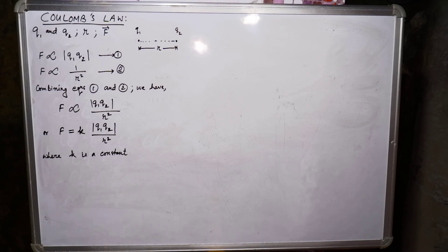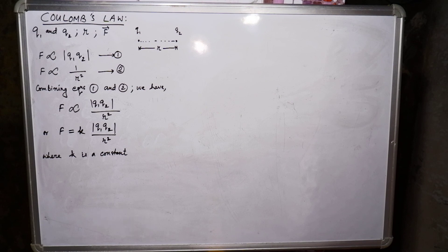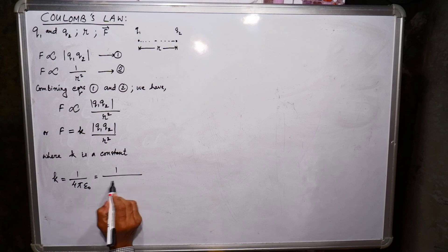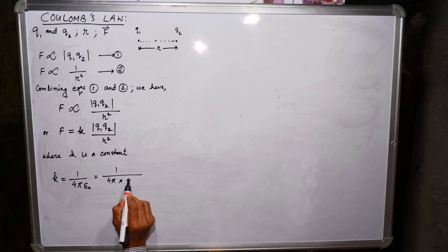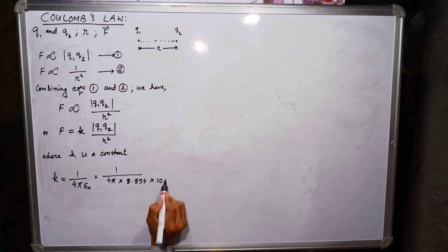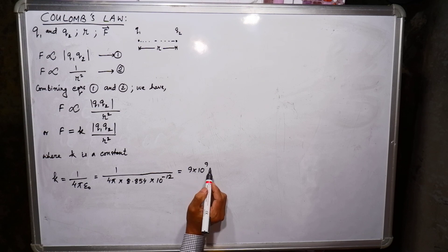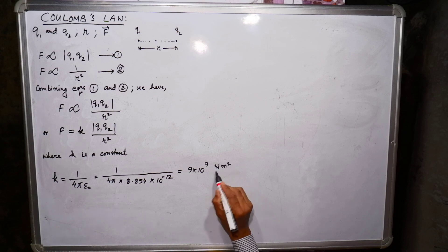The value of k depends upon the system of units employed and the nature of the medium in which the charges are placed. In SI units with charges in vacuum, k = 1 / (4π·ε₀), which equals 1 / (8.854 × 10⁻¹²), giving k = 9 × 10⁹ N·m²/C².